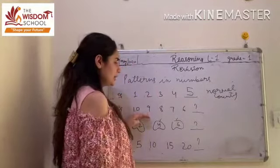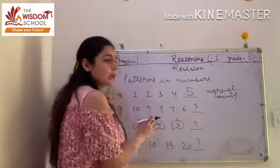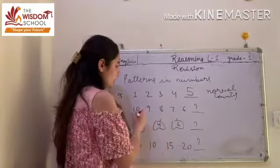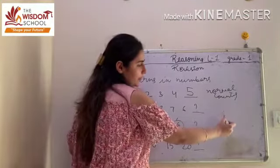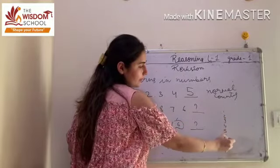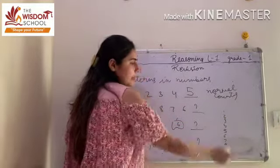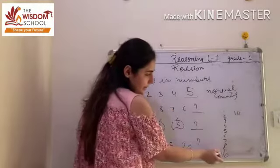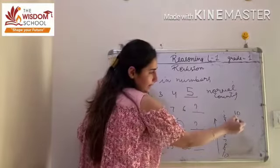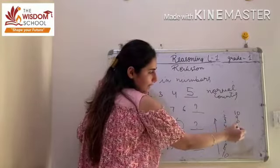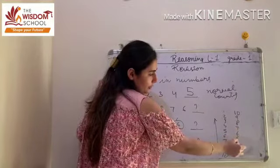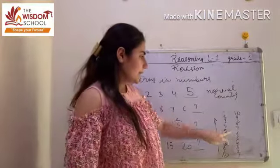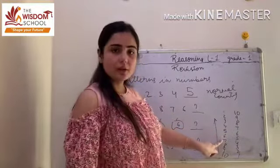In the next example, we have reversed counting. For example, we have written 1 to 10 counting: 8, 9, and 10. Now in reverse counting, we start from 10. We follow the next step: 10, 9, 8, 7, 6, 5, 4, 3, 2, and 1. So reverse counting is written in the opposite form of normal counting.